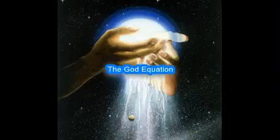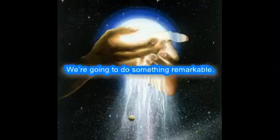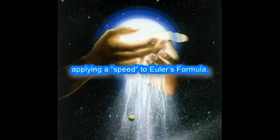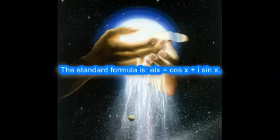Chapter 6. The God Equation. We're going to do something remarkable. We're going to make the God Equation as simple as possible by applying a speed to Euler's formula. The standard formula is e^(ix) = cos(x) + i sin(x).